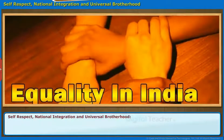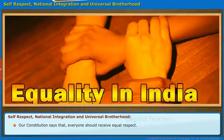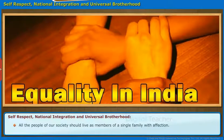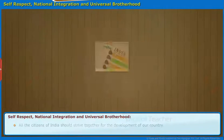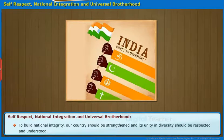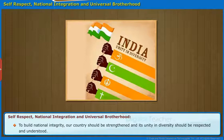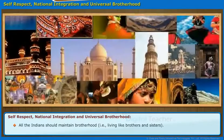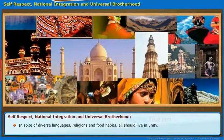Here, we will know what is meant by self-respect, national integration, and universal brotherhood according to our Constitution. Our Constitution says that everyone should receive equal respect. All the people of our society should live as members of a single family with affection. All the citizens of India should strive together for the development of our country. To build national integrity, our country should be strengthened and its unity in diversity should be respected and understood. All the Indians should maintain brotherhood, that is living like brothers and sisters. In spite of diverse languages, religions, and food habits, all should live in unity.